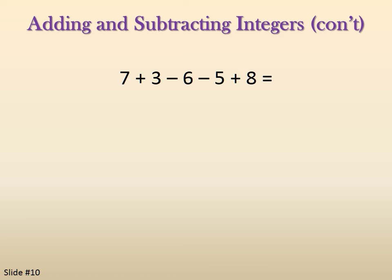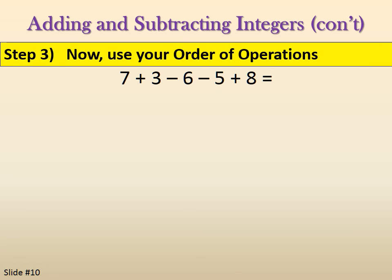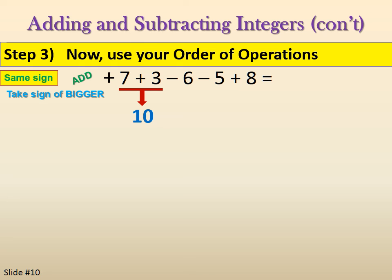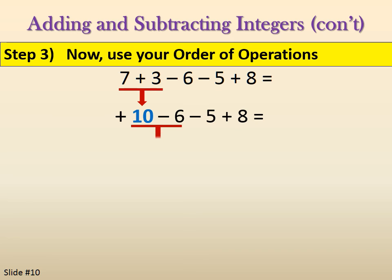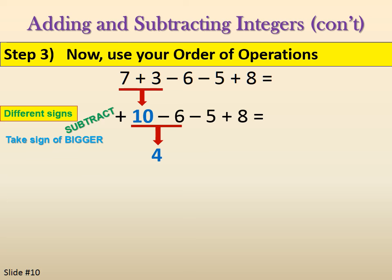Now we go left to right using order of operations. Look at the first two: 7 plus 3. We have a positive 7 and a positive 3 — the same sign — so we add, which gives us 10. Take the sign of the bigger number: since 7 was bigger than 3, we grab the plus sign. Bring down the rest of the problem. Next two: positive 10 and negative 6 — different signs — so we subtract. 10 minus 6 gives us 4. Since 10 is bigger than 6, we take the plus sign, giving us positive 4.